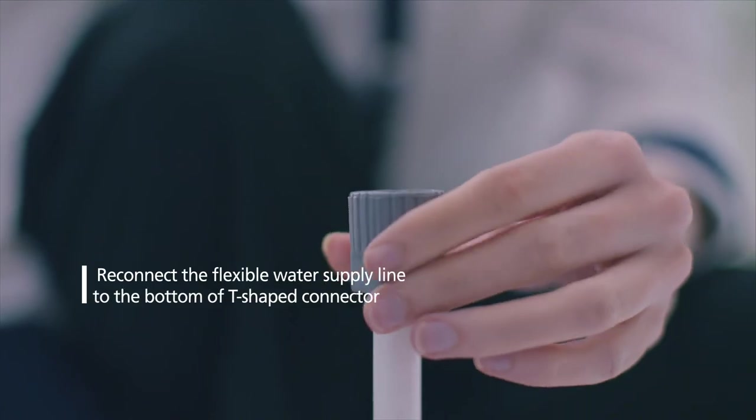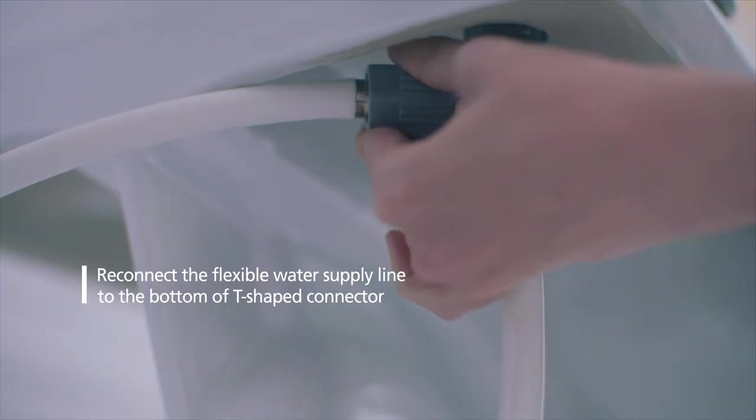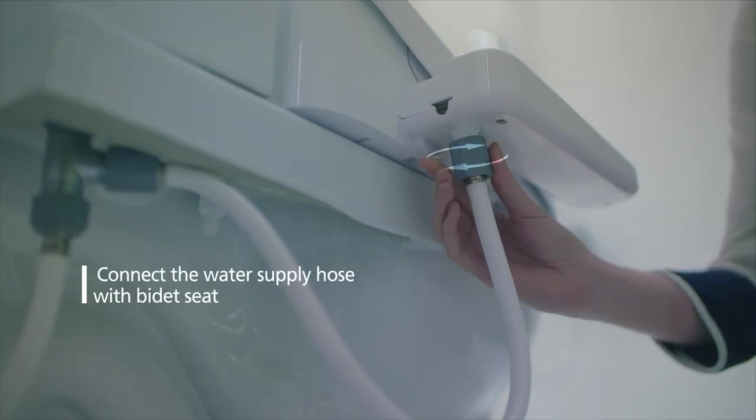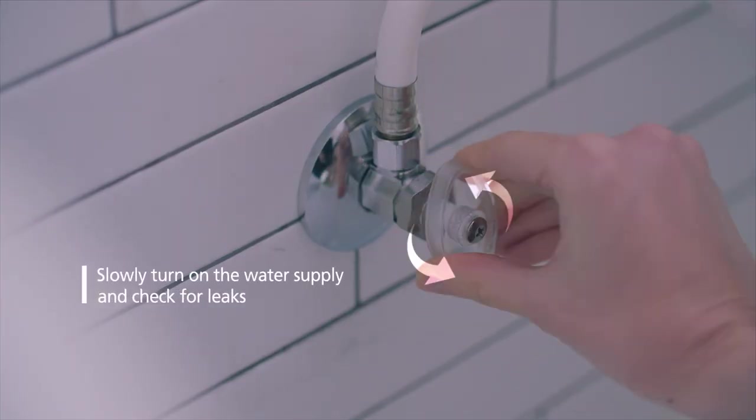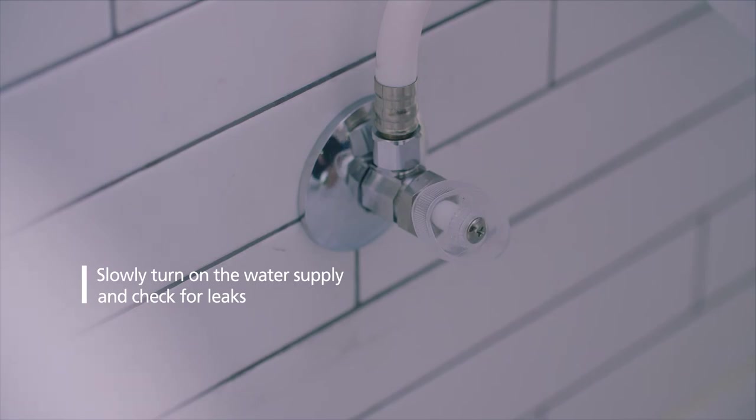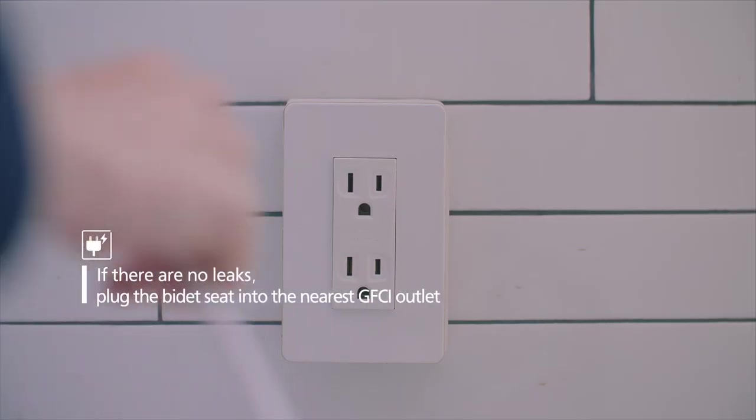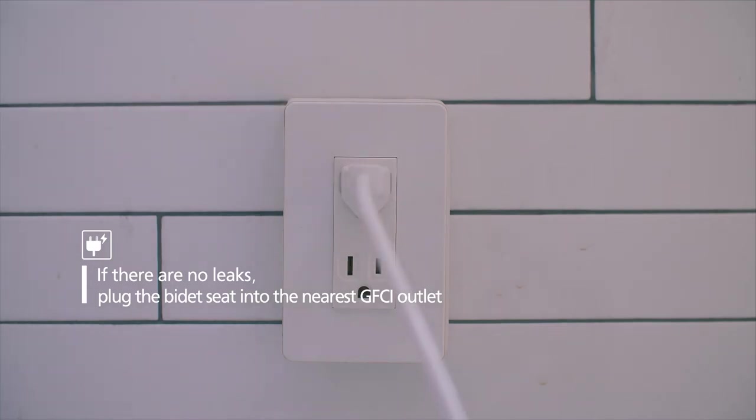Reconnect the flexible water supply line to the bottom of T-shaped connector and connect the water supply hose with bidet seat. Slowly turn on the shut-off valve and check for leaks. If there are no leaks, plug the bidet seat into the nearest GFCI outlet.